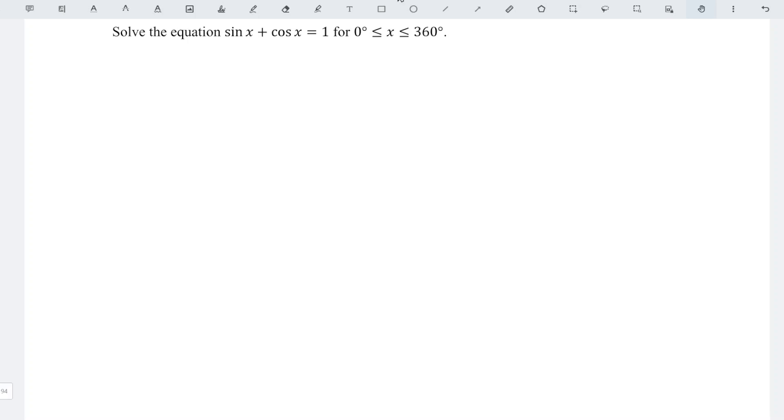Hi, this is asking how to solve this trigonometric equation by using trigonometric identity. First, I'm going to square both sides.